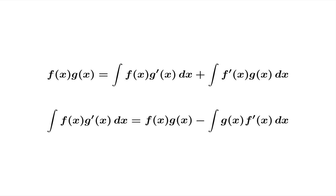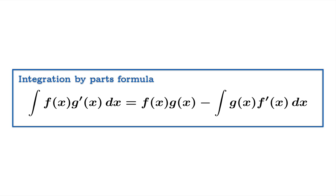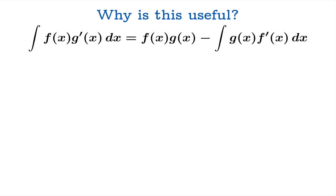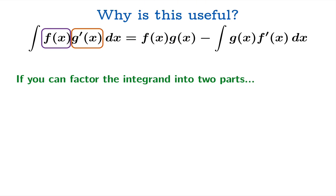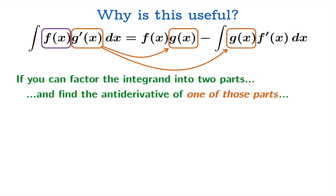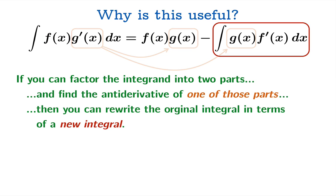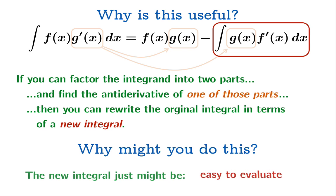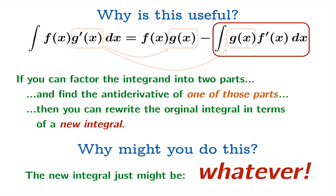Using a little algebra, we get: the integral of fg′ equals fg minus the integral of gf′. And believe it or not, this is our integration by parts formula. What we can do with this formula is factor the integrand into two parts, find the anti-derivative of one of those parts, and rewrite the original integral in terms of a new integral. That new integral — the integral of gf′ — just might be easier to evaluate than the original one.